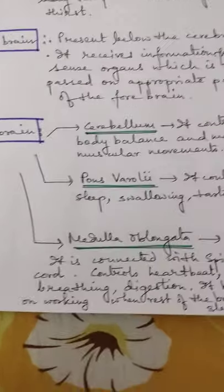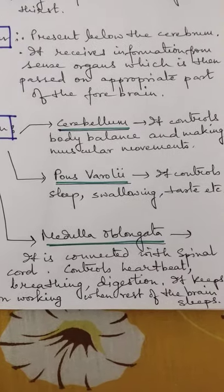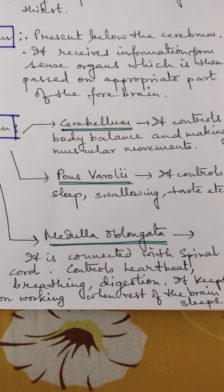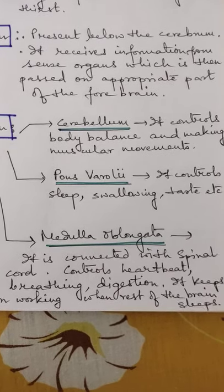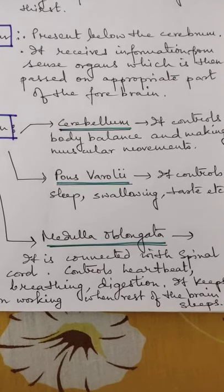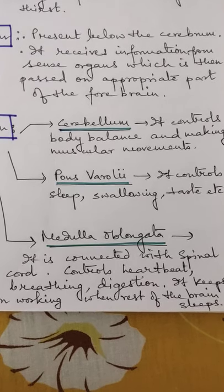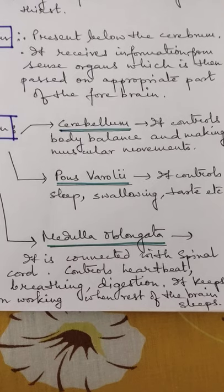Hindbrain - the back of the brain - has three very important parts: cerebellum, pons varoli, and medulla oblongata. Cerebellum controls body balance and muscular movements, all kinds of muscular movements while walking, running. We keep coordination and balance with the help of this cerebellum.